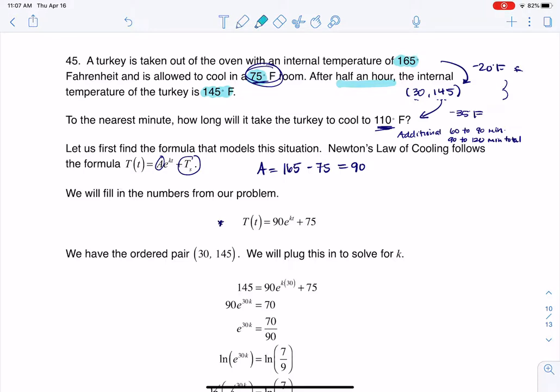And then what I need to do is I need to solve for k. Once I solve for k, then I can actually figure out how long it's going to take this turkey to cool to 110. Well, to do that, I need an ordered pair, and we do have one. So we have this (30, 145). So I'm going to plug in 30 for little t and 145 for big T. So I'm literally going to put 145 here, and I'm going to put 30 here, and that's going to allow me to solve for k.